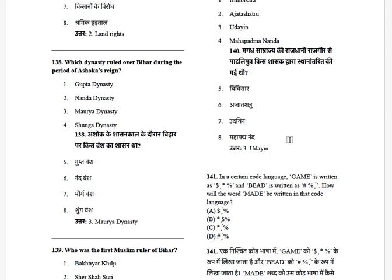Which dynasty ruled over Bihar during the period of Ashoka? The options are: Gupta, Nanda, Maurya, and Shunga. The answer is Maurya.